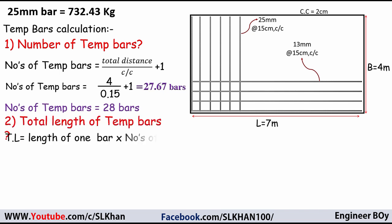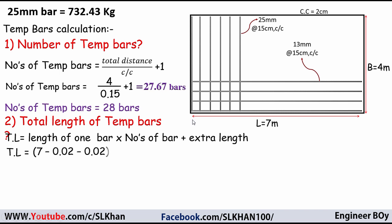Total length of temperature bars: TL = length of one bar × number of bars + extra length. The temperature bars span the 7-meter side, so the length of one bar is 7 meters minus 2 times the concrete cover: 7 − 2 × 0.02. Multiplied by 28 bars. No extra length is mentioned in the drawing — no overlaps or hooks — so extra length is zero. Total length = 194.88 meters.